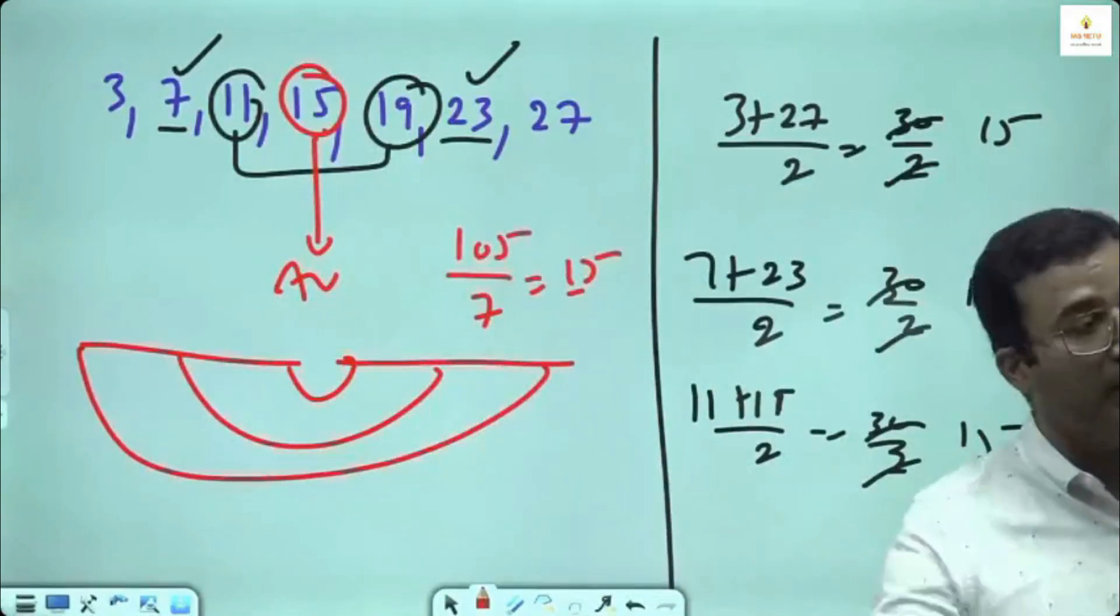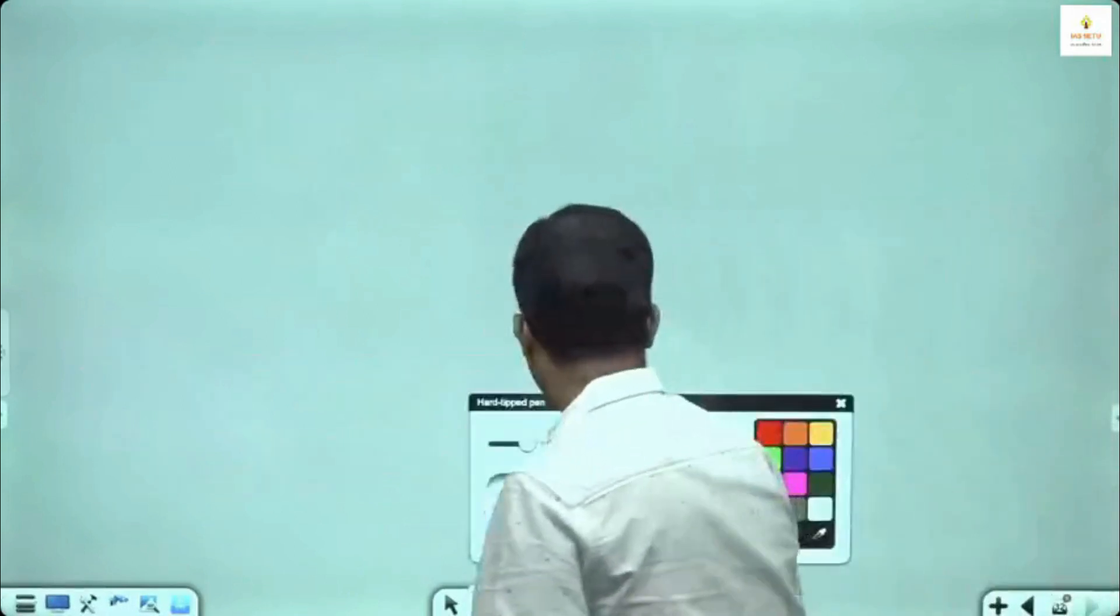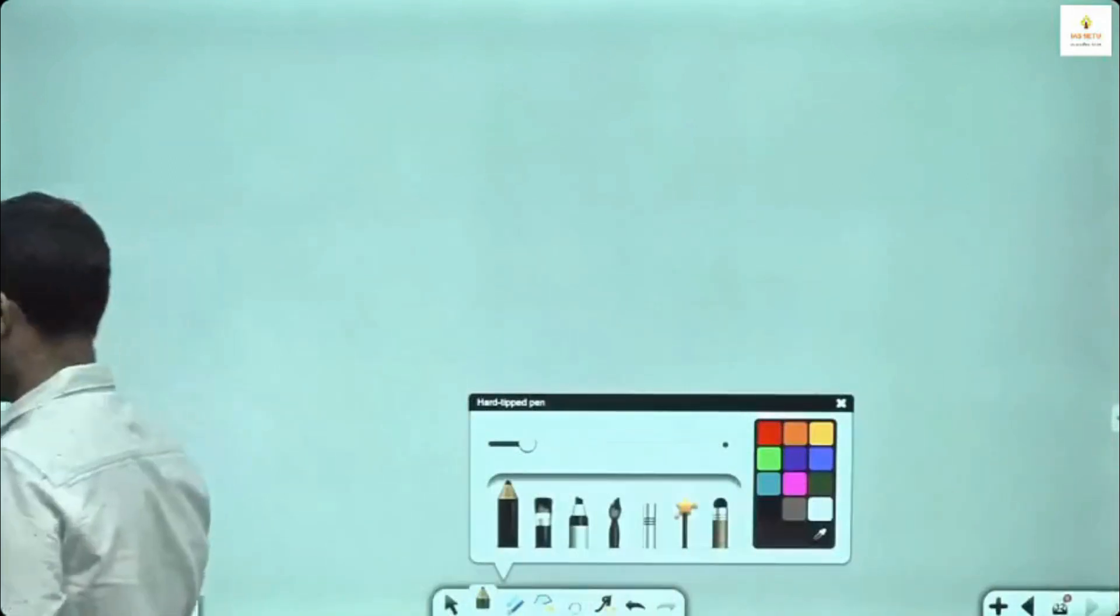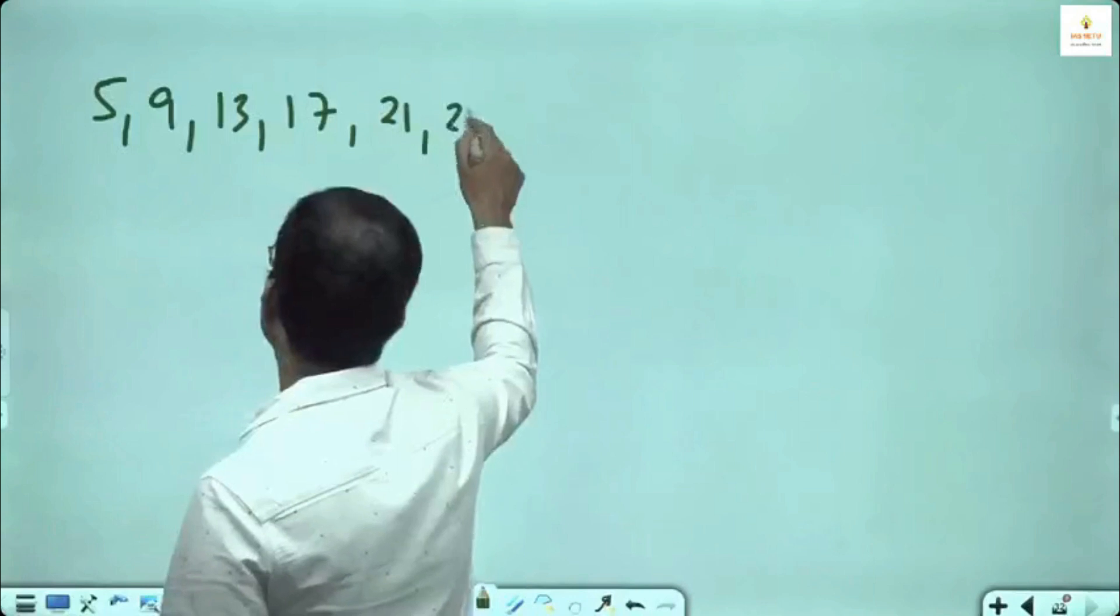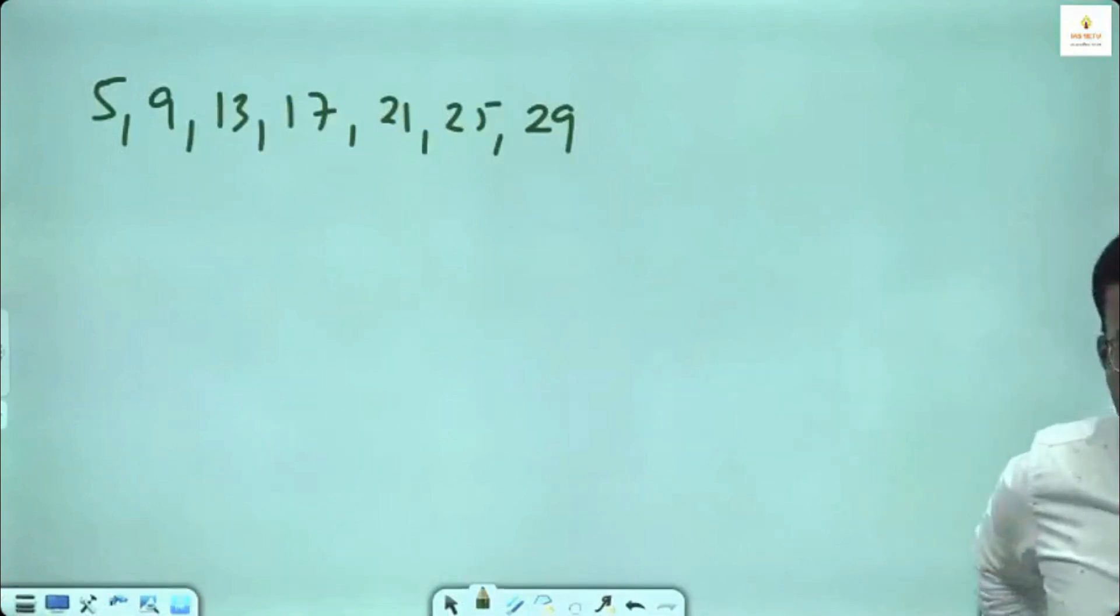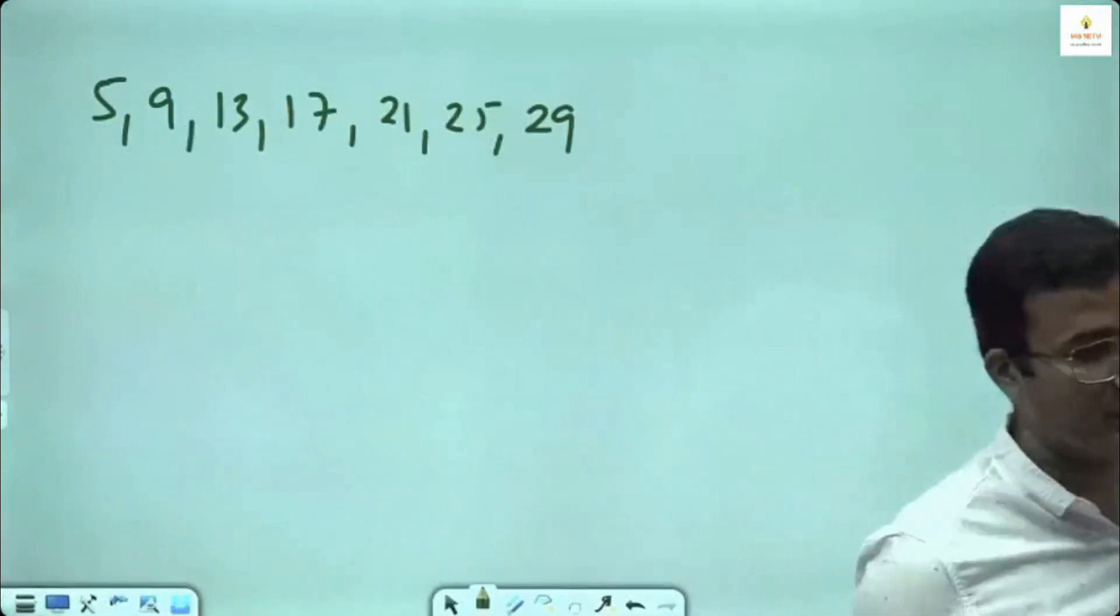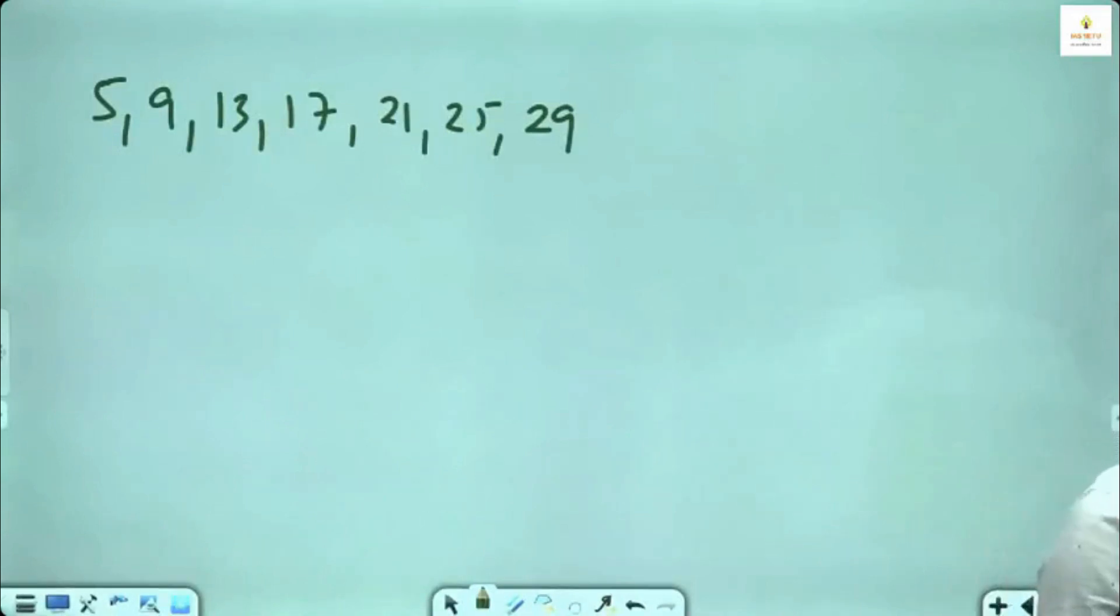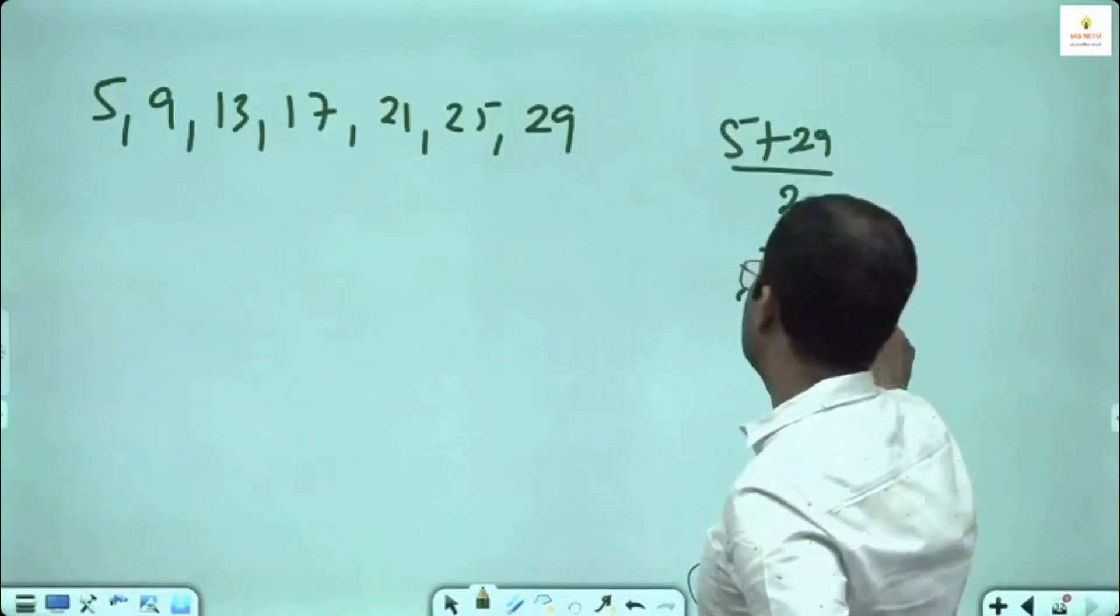I ask you a question: 5, 9, 13, 17, 21, 25, 29. What is the average of this sequence? 17. No need to take total. Once you know this is AP, it takes 2 seconds. AP average is very simple: first term plus last term divided by 2. You can say 5 plus 29 divided by 2, 34 divided by 2 is 17.